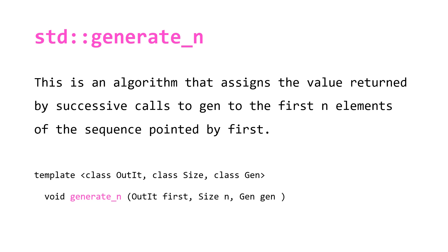For std::generate_n, we have an algorithm that assigns the value returned by successive calls to gen to the first n elements of the sequence pointed to by first. Note that for this algorithm we don't have forward iterators as our first templated type — we have output iterators. The second templated type is size and the third is gen. The parameters are an output iterator first, then size n, and then our generator gen.